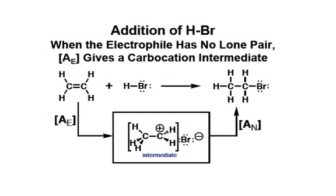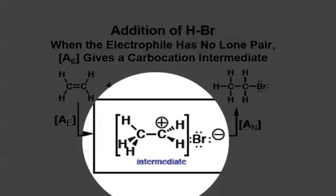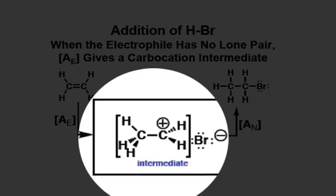Before we look at the reactions of alkynes, let's remind ourselves about the way in which HBr adds to alkenes. The important point to focus on is that after our AE step, we get generation of a carbocation intermediate.